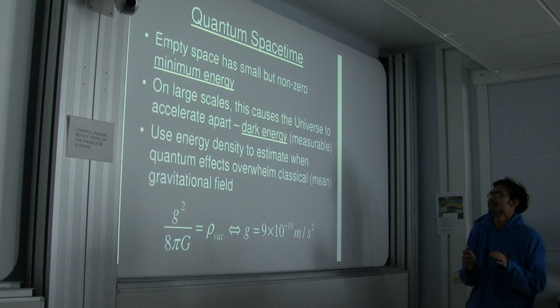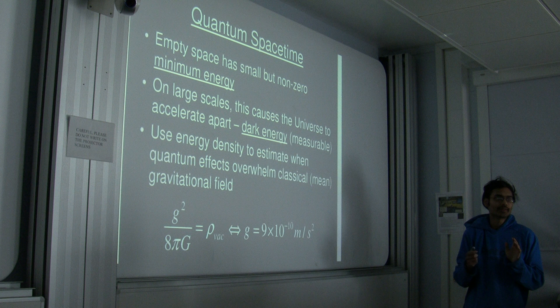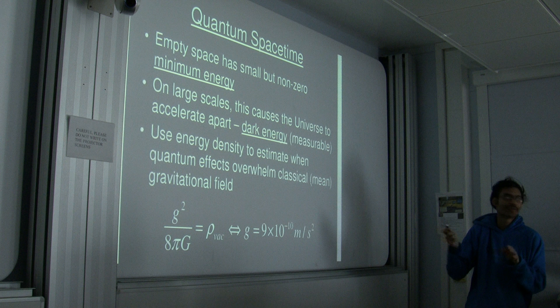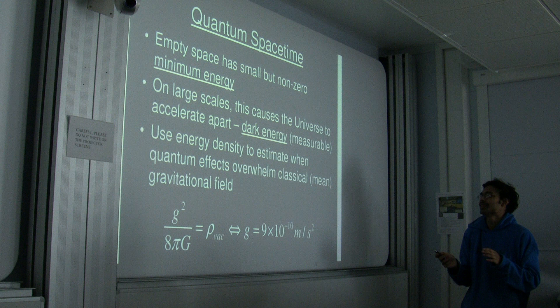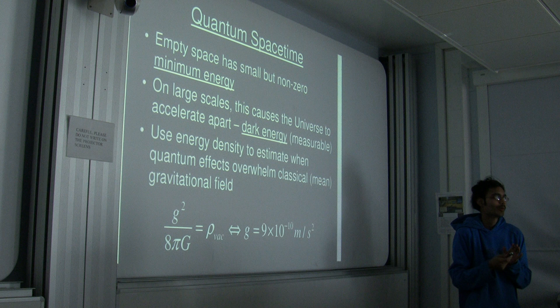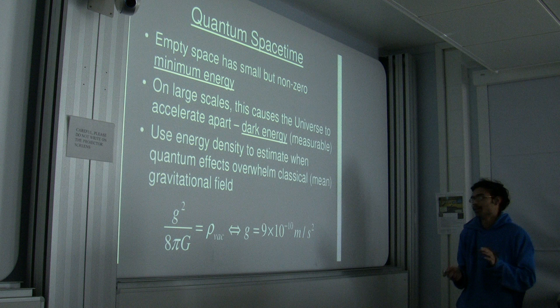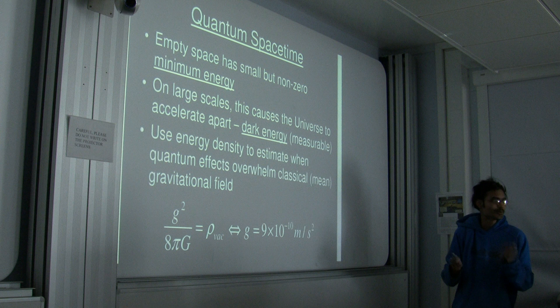The main reason we think vacuum energy exists is because we can see the universe accelerating apart. If you had a quantum harmonic oscillator, there would be a minimum zero-point energy. You think it's similar for spacetime: it has a very small amount of zero-point energy, which you can call dark energy, and you can measure how much that is — you don't need to understand quantum gravity to do that, you can just measure it.